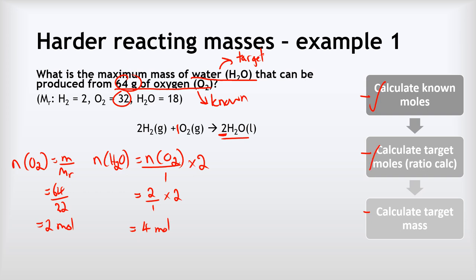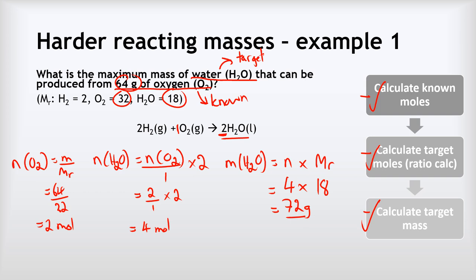The last step is to calculate the mass of that much water. Mass of H2O equals n multiplied by Mr, so that is 4 multiplied by the relative formula mass 18, and that gives us 72 grams of water as our final answer.